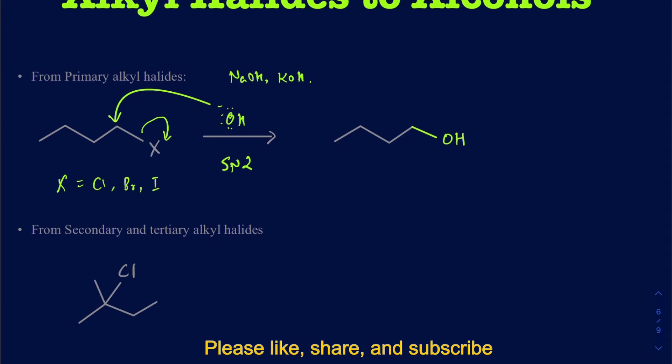Now, this one is not a chiral center, so I don't really have to worry about stereochemistry. We can just do this SN2 with a strong nucleophile. Remember, the hydroxide, along with being a strong nucleophile, is also a strong base, so you have to be really careful using it if you have any alkyl halide besides a primary.